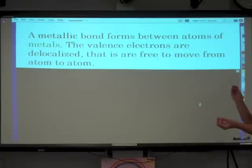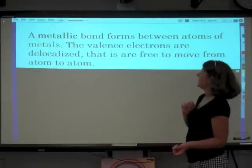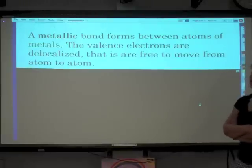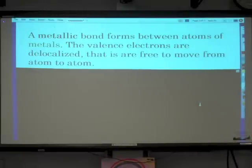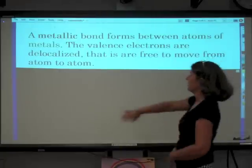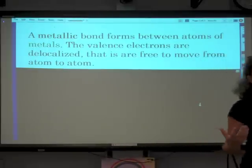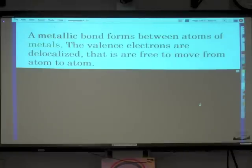Now, what holds one metal atom to another metal atom? Well, that's a metallic bond. And a metallic bond is when the valence electrons are delocalized. So the outer shell electrons are free to move from one metal atom to the next, to the next, to the next. So we think of it as a sea of valence electrons. They are delocalized. They're not localized on one atom. They just move around. And this is what gives metals their characteristics of conductivity, malleability, ductility, so that they can be stretched without breaking.